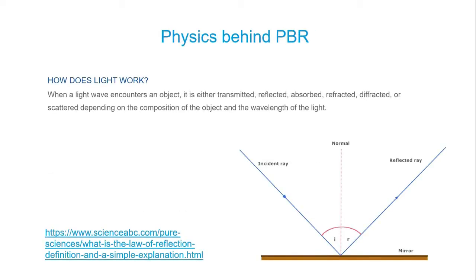To better understand PBR systems, we need to take a little overview of how light works — we're not going to get into the super details. I provided links in the handouts to websites where they go really deep into it, with equations and everything. So how does light work? When light encounters an object, it's going to do one of a couple things: it's going to be reflected, it's going to be absorbed depending on the material, and then it's going to be refracted.